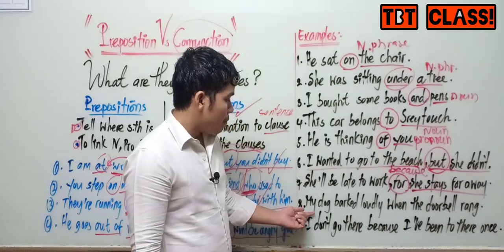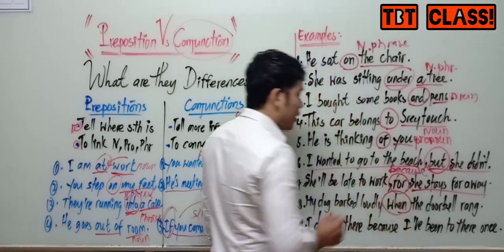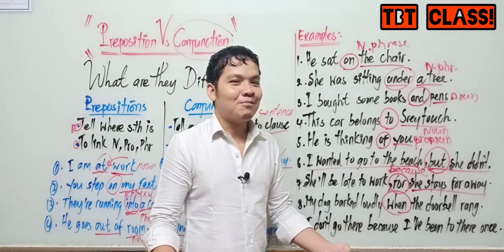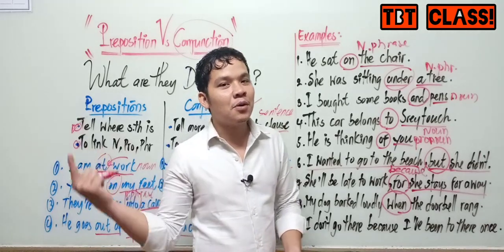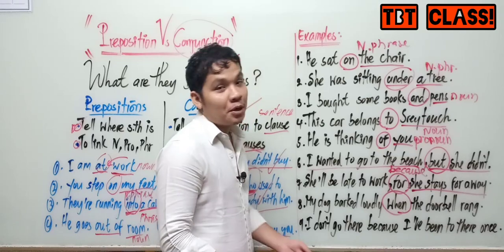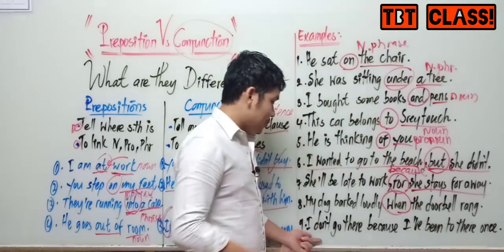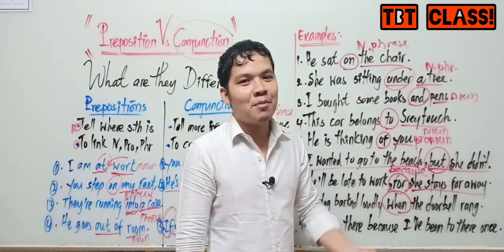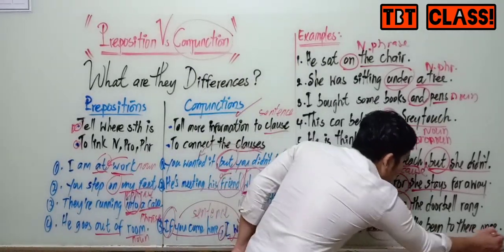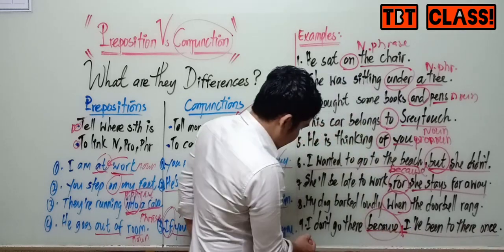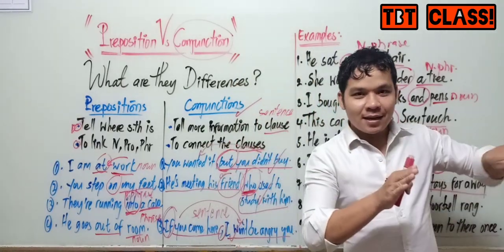Number eight: "My dog barked loudly when the doorbell rang." "When" is the conjunction here. Number nine: "I don't go there because I've been there once." "Because" is the conjunction — after "because" you see a sentence: "I've been there once." Two sentences are combined together by the conjunction. Remember: the sentence that comes after the conjunction we call a subordinate clause or dependent clause.